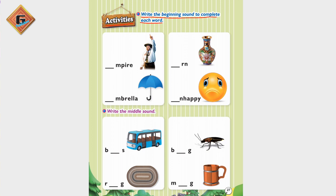Write the picture's first letter or first sound. The first one is umpire. So what will the first sound and the first letter be? U. Umpire. And next is umbrella.